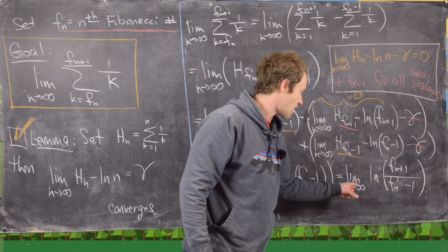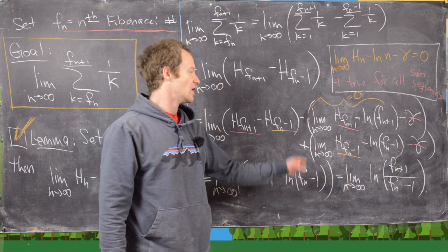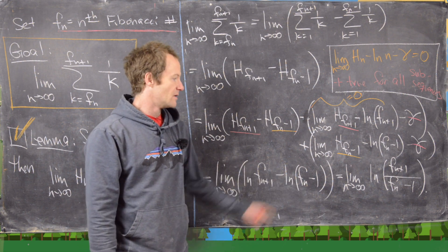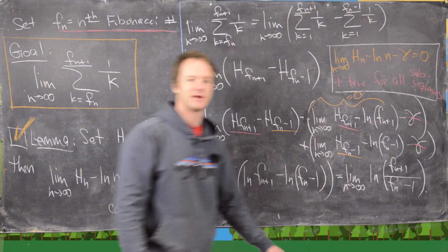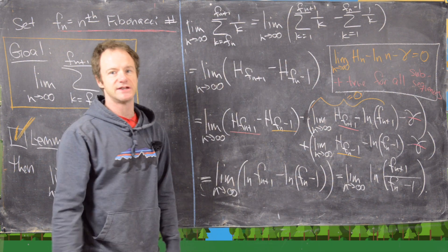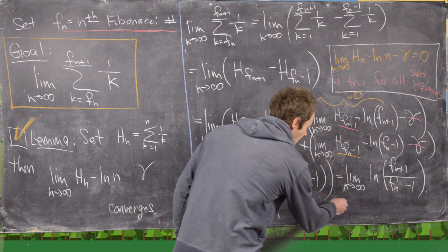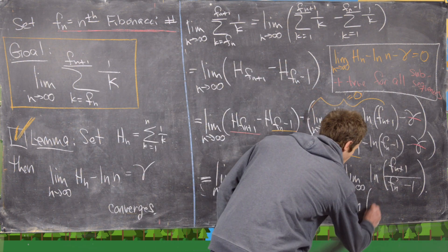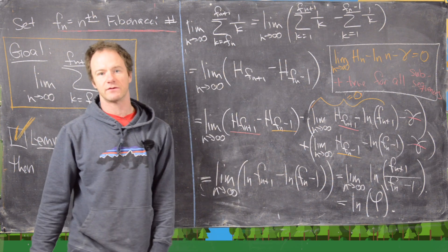Since the natural log is a continuous function, we can bring that limit inside. That limit is related to one calculated in a previous video, and what we get is the natural log of phi, where phi is the golden ratio. So I think this is a good place to end.